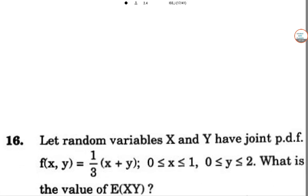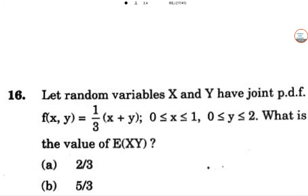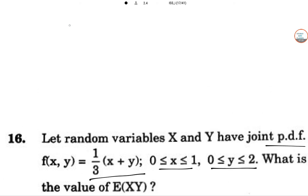Question number 16. Let a random variable X and Y have a joint PDF, f of X, Y that is one third of X, Y. Where 0 less X less 1 and 0 less Y less 2. What is the value of expectation of X, Y? So in this case, we can do it, F of X, Y is this. So expectation of X, Y just like the first question.